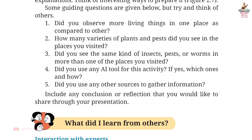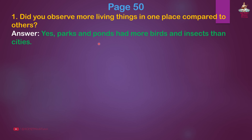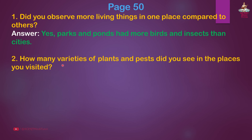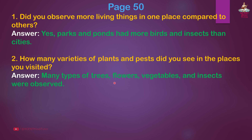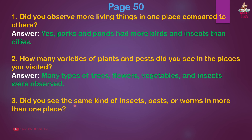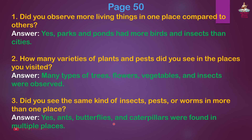Page 50, Question 1: Did you observe more living things in one place compared to another? Answer: Yes, parks and ponds had more birds and insects than cities. Question 2: How many varieties of plants and pests did you see in the places you visited? Answer: Many types of trees, flowers, vegetables and insects were observed. Question 3: Did you see the same kind of insects, pests or worms in more than one place? Answer: Yes, ants, butterflies and caterpillars were found in multiple places.